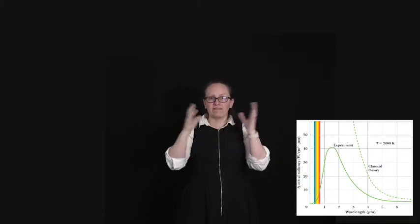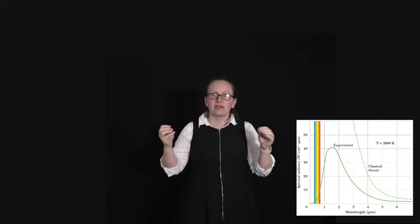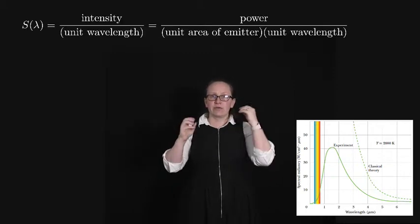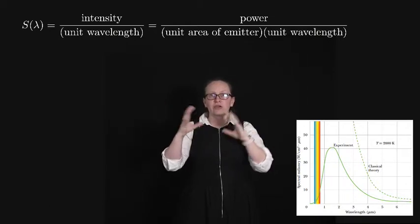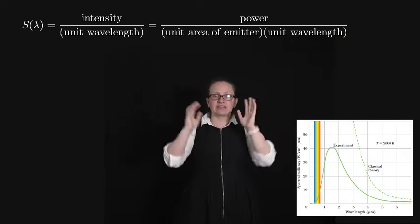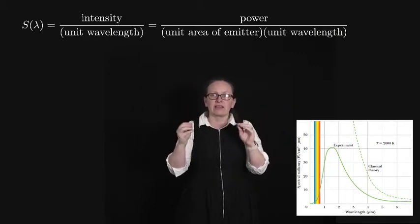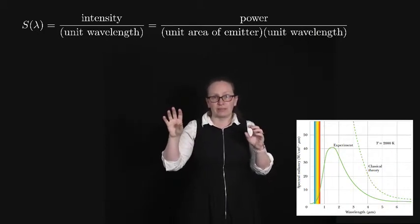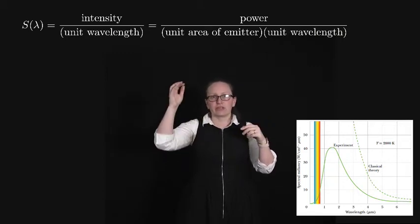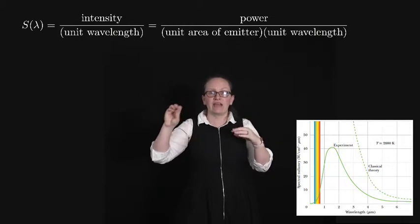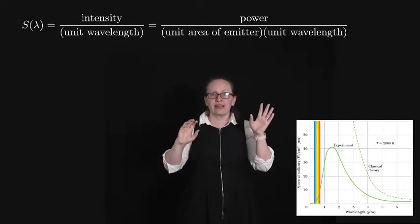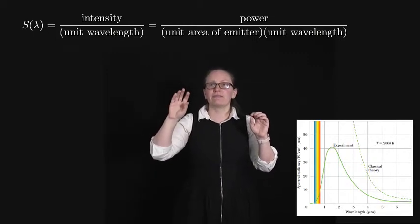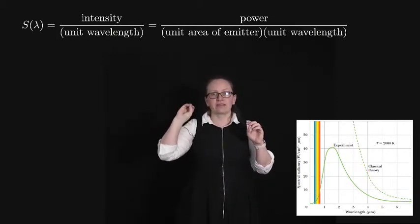What people were looking at was intensity versus wavelength graphs. They came up with a function called spectral radiance. The spectral radiance has the symbol S and it is a function of the wavelength. We write it as S(λ) to indicate that it's a function of the wavelength. This was equal to the intensity divided by a unit wavelength. Because intensity is equal to the power divided by the area of an emitter, we can also say that the spectral radiance is equal to the power divided by a unit area of the transmitter divided by a unit wavelength.